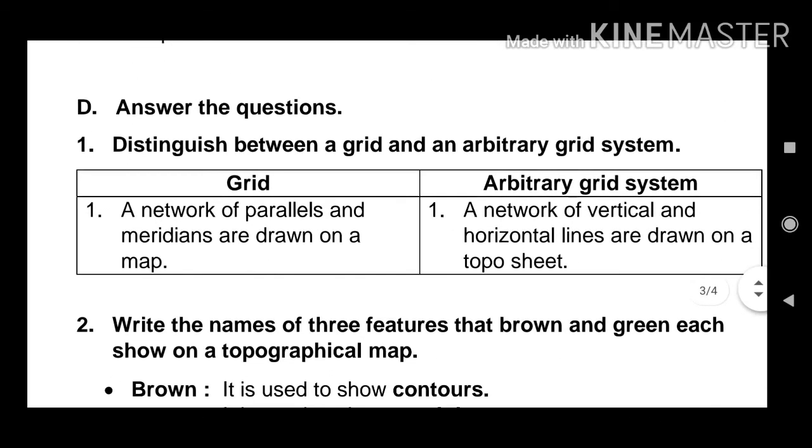Next one. Answer the questions. Distinguish between a grid and an arbitrary grid system. Grid. A network of parallels and meridians are drawn on a map. Arbitrary grid system. A network of vertical and horizontal lines are drawn on a topo sheet.